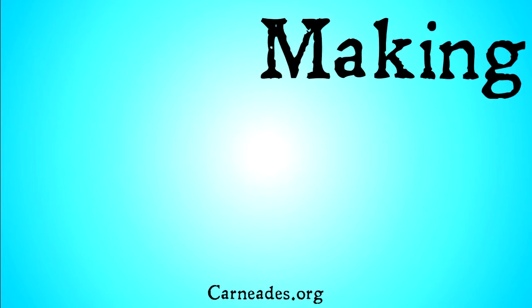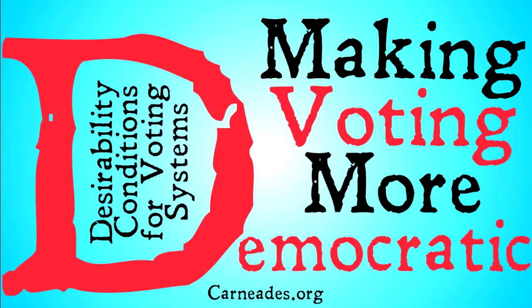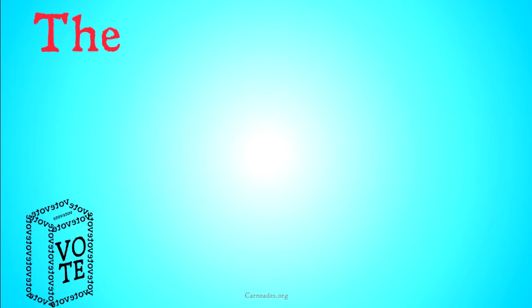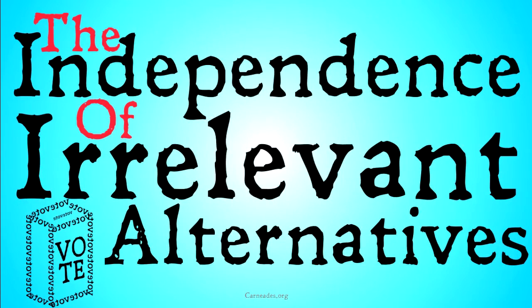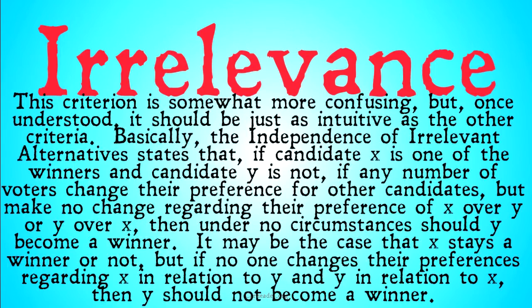Welcome back to Carnades.org. Today we're going to be continuing with our series making voting more democratic — desirability conditions for voting systems. In this video we will be looking at the infamous Independence of Irrelevant Alternatives. This criterion is somewhat more confusing but once understood it should be just as intuitive as the other criteria that we've looked at.